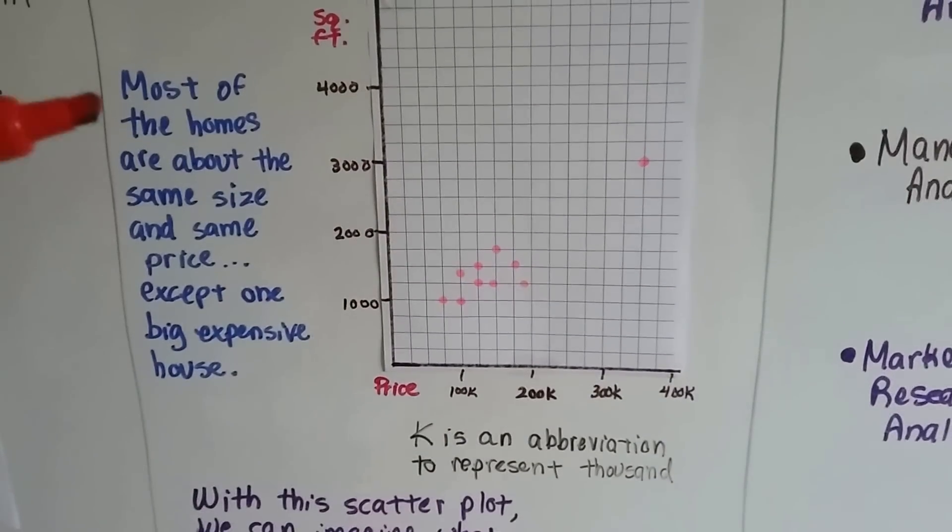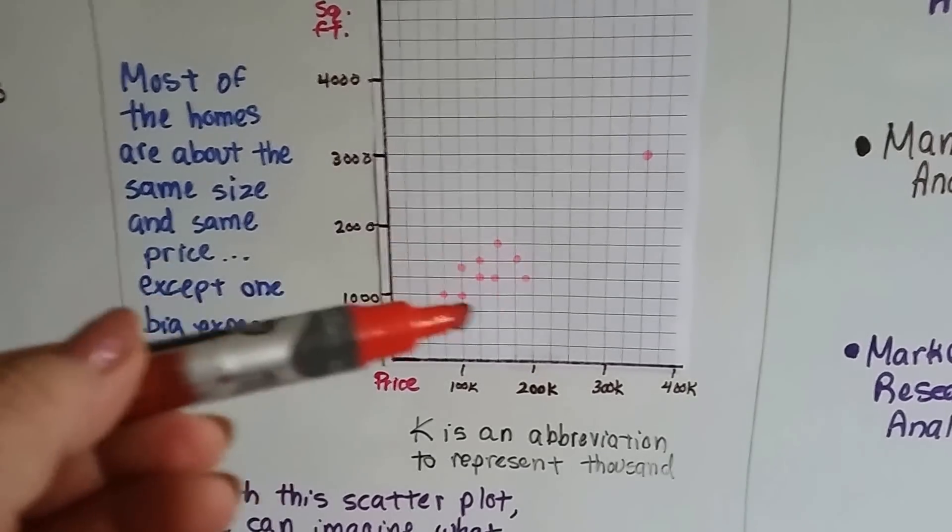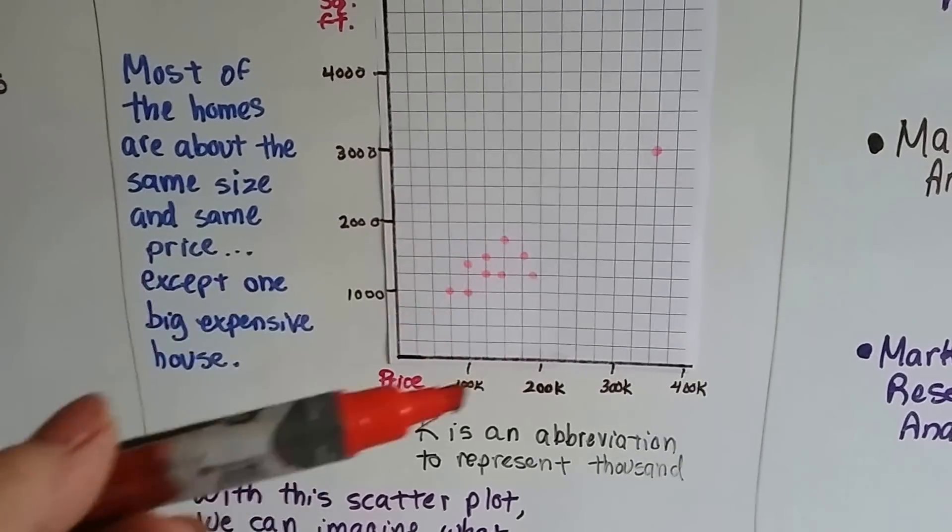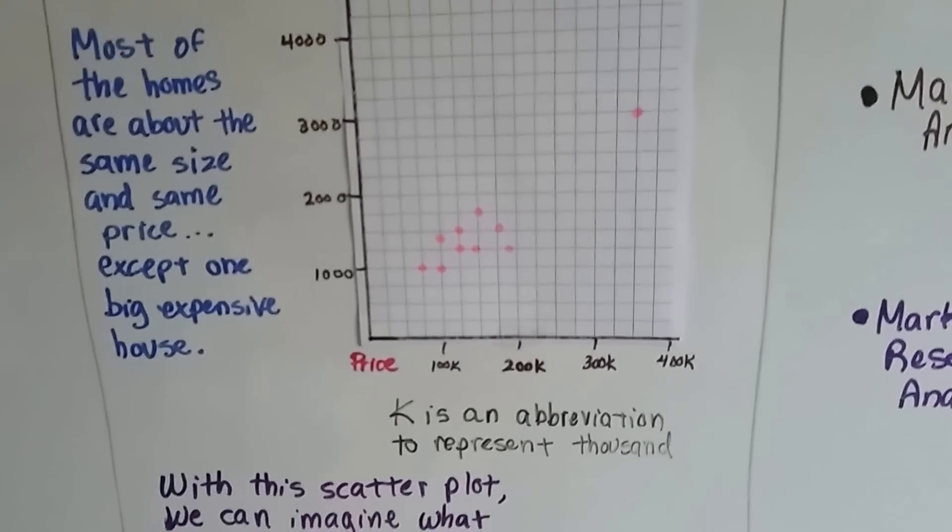So we can look at this graph and see that most of the homes are about the same size and price on this city block, except one big expensive house. So it's probably a mansion or something, right?